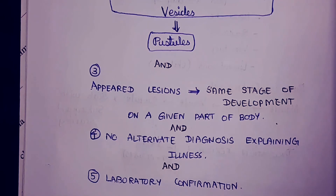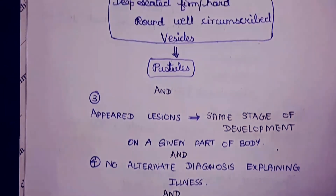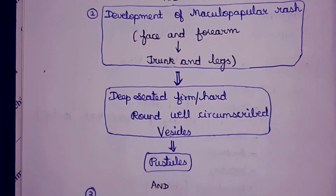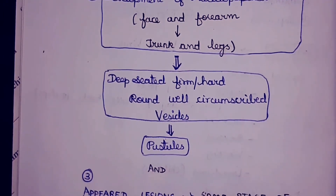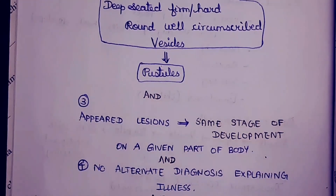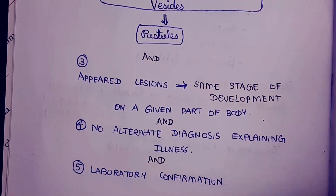The fifth feature is laboratory confirmation. In summary, these five features confirm a case of smallpox: acute fever with malaise, maculopapular rash spreading centrifugally, vesicle and pustule formation, same-stage lesions within a body region, no alternate diagnosis, and laboratory confirmation.